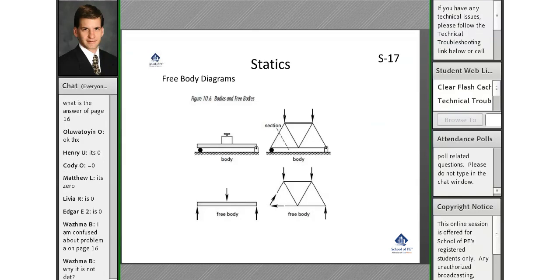Much later on, we're going to briefly talk about the method of sections. When we do that, we're going to be lopping off a portion of a diagram. Just like everything else we remove, when we remove it, we'll have to replace it with some arrows. So a free body diagram is just a process of removing stuff and replacing it with arrows.